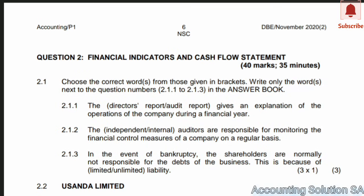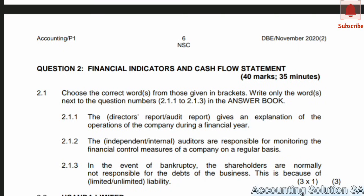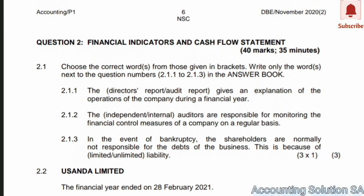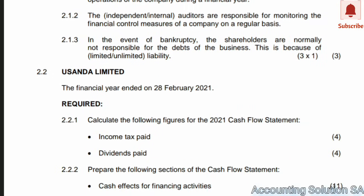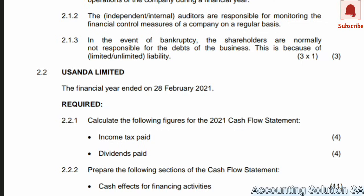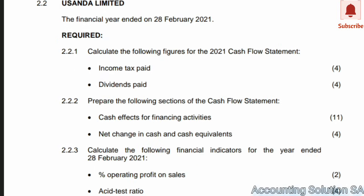This question is from the 2020 Paper 1 — Question 2, financial indicators and cash flow statement, combined with the financial indicators. The required asks us to calculate figures for the 2021 cash flow statement: number one, income tax paid; number two, dividends paid. It's 8 marks to calculate these two amounts, and after the calculation you transfer them to the cash flow statement under operating activities, which gives additional marks.